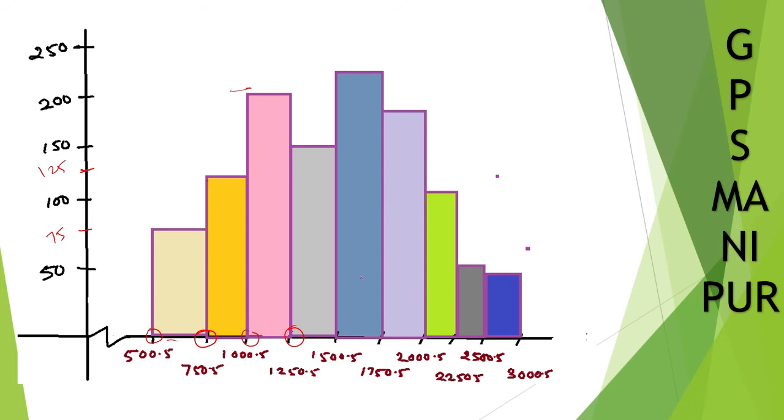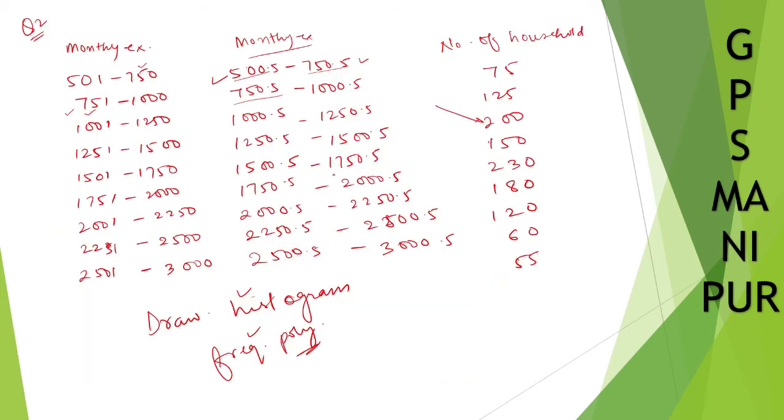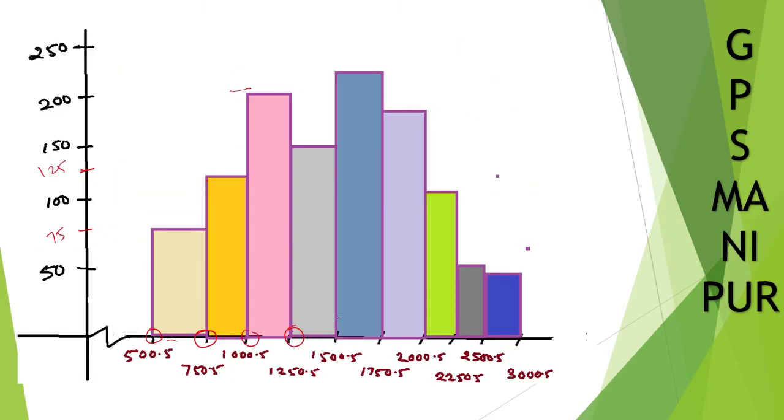Next is 1250.5 to 1500.5, which is 150. So from here to here it is 150. Similarly from here to here it is 230. I hope you can understand and you can watch this.